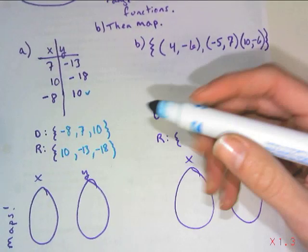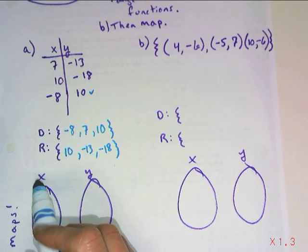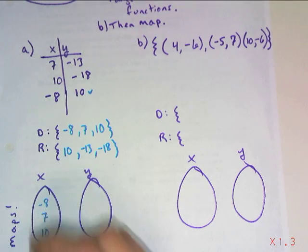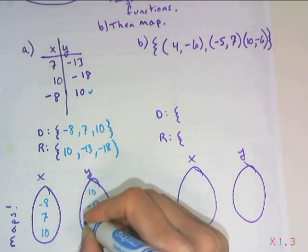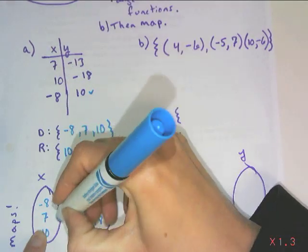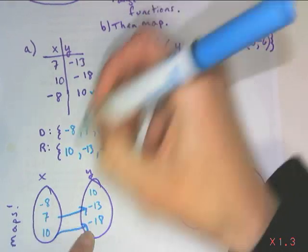So when we put them in our map, our domain values, these three, are going to go in the first x circle. So we got a negative eight, a seven, a ten, and then the range, we've got a ten, a negative thirteen, and a negative eighteen. So if we map them up, seven goes to negative thirteen, ten goes to negative eighteen, and negative eight goes to ten.